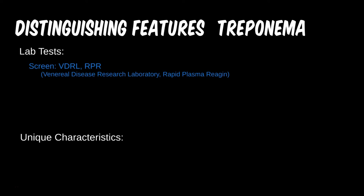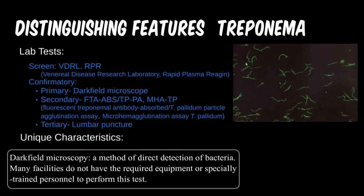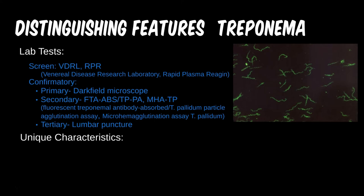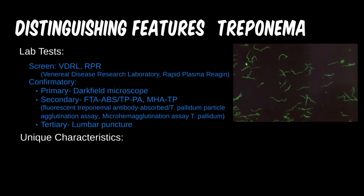This is why confirmatory testing with the more expensive tests is needed. Though dark-field microscopy is easy and cheap, microbial samples can degrade quickly or become useless if the patient has taken antibiotics. It is also only useful in primary syphilis, which is usually treated empirically. In developed nations, secondary and tertiary syphilis are rare, though this doesn't seem to stop them from being a part of test questions frequently.